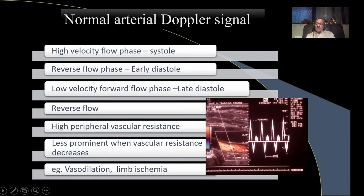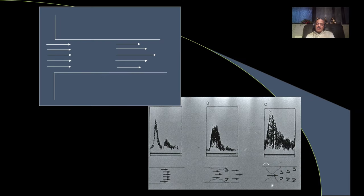The normal waveform in a peripheral artery is triphasic: a quick systolic upstroke, one downward flow, one forward component, and then absent diastolic flow. This is because the limbs do not require blood flow throughout the entire cardiac cycle. With laminar flow there is a clear spectral window; the moment there is a plaque, there is turbulence and the window fills up with multiple dots, telling us something is wrong.